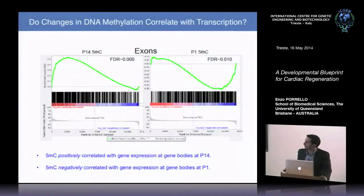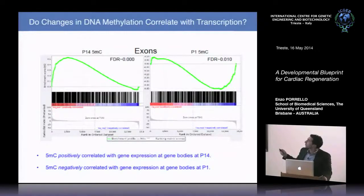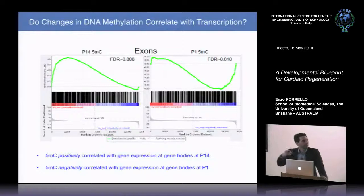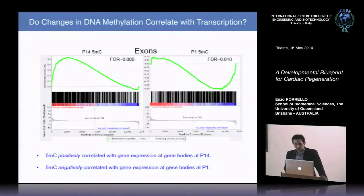Extensive bioinformatic analysis revealed that at postnatal day 14, increased methylation across gene bodies positively correlated with gene expression — consistent with the cancer and stem cell literature. When methylation increased at exons at P14, this was typically associated with increased gene expression. Surprisingly, at postnatal day 1 there was a negative correlation between gene body methylation and transcription — completely opposite to the P14 relationship.